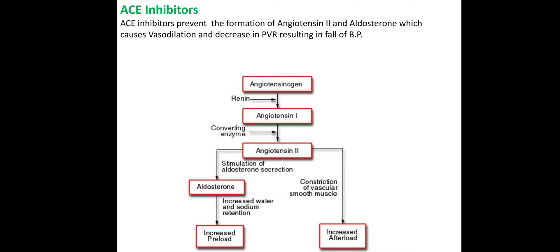Angiotensin 2 stimulates aldosterone. Aldosterone functions to cause water retention, which increases preload. Another function of angiotensin 2 is constriction of blood vessels — vasoconstriction — which increases afterload.